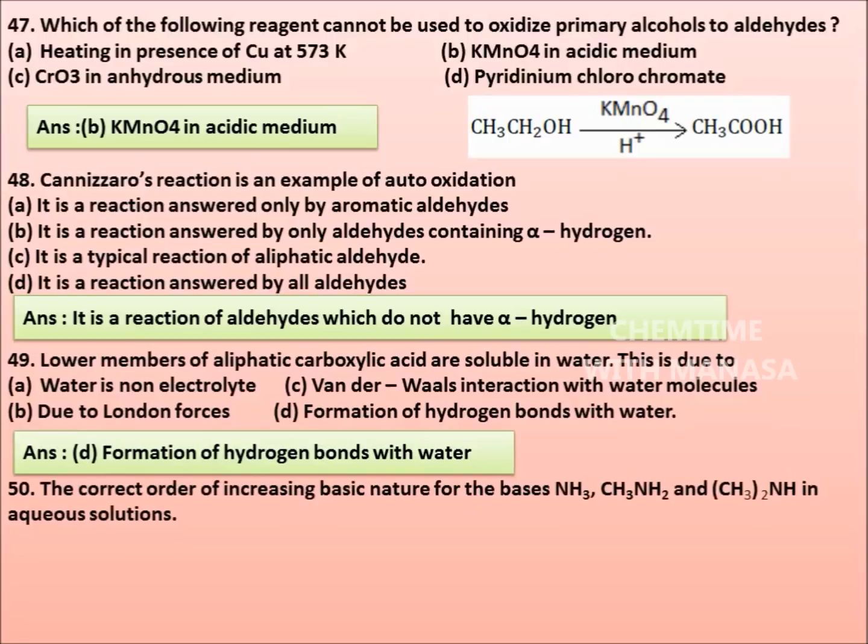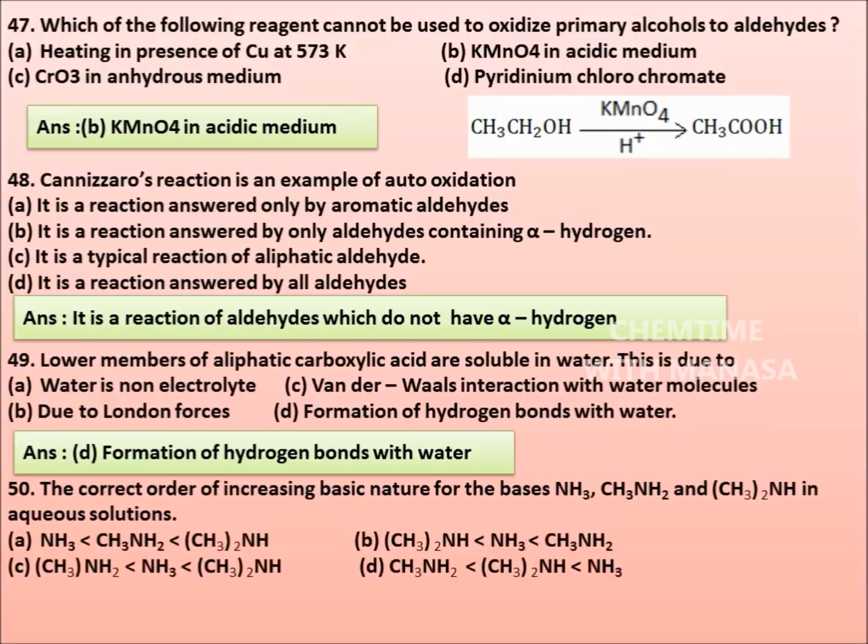50. The correct order of increasing basic nature for the bases NH₃, CH₃NH₂ and (CH₃)₂NH in aqueous solutions. Options are: NH₃ < CH₃NH₂ < (CH₃)₂NH, (CH₃)₂NH < NH₃ < CH₃NH₂, CH₃NH₂ < (CH₃)₂NH < NH₃. Correct answer is option A: NH₃ less basic than CH₃NH₂, which is less basic than (CH₃)₂NH.